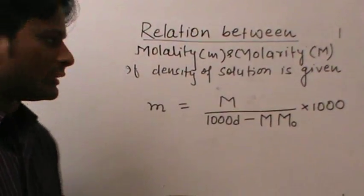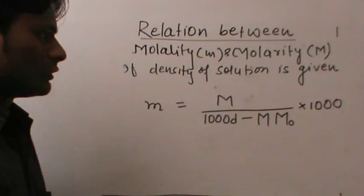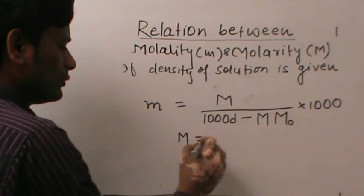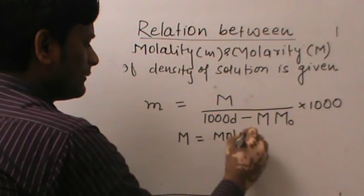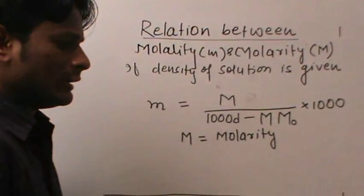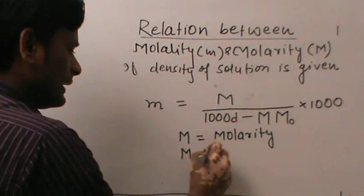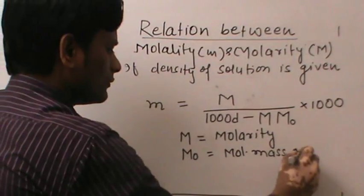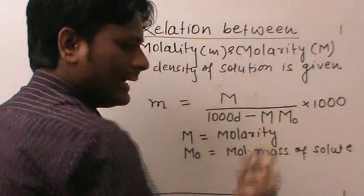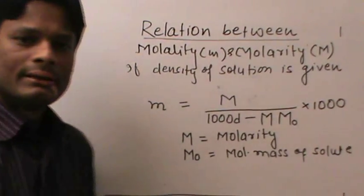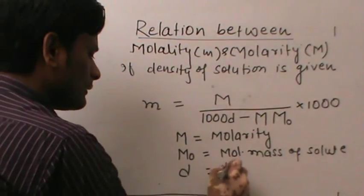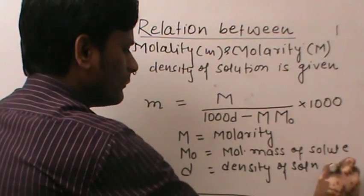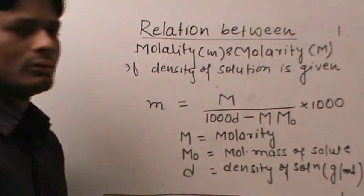This formula can be used when the density of the solution is given. Here, capital M equals molarity, M₀ equals molecular mass of solute, and D is the density of the solution in grams per milliliter.